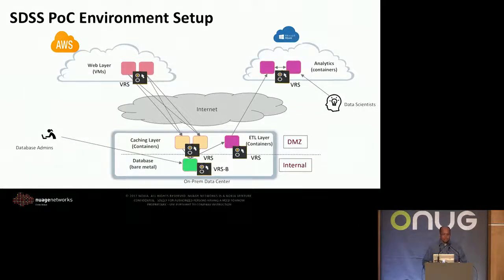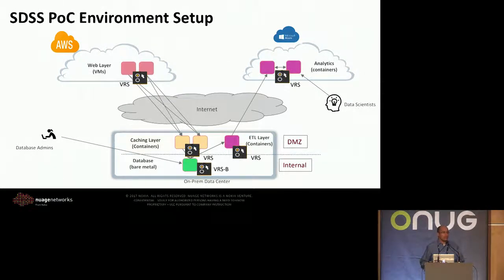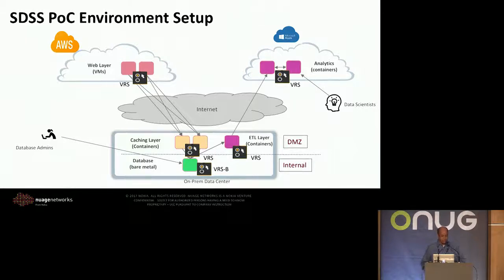So this will be the topology of today's demo. I will go over the security features that we provide and how we fulfill the security use case for the SDSS working group here in ONOG. If you look at our topology, we have two public clouds on the top — AWS on the left and Azure on the right.